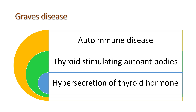The hypersecretion of thyroid hormone is the main feature of Graves disease. It is the most important cause of hyperthyroidism. It is an autoimmune disease where the antibody forms against the TSH receptors — that antibody is the thyroid stimulating autoantibody — so it produces hypersecretion of thyroid hormone.